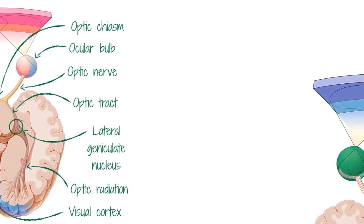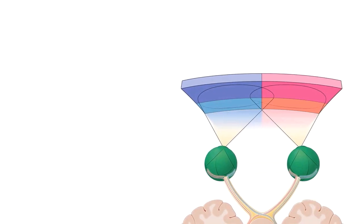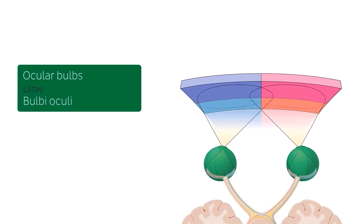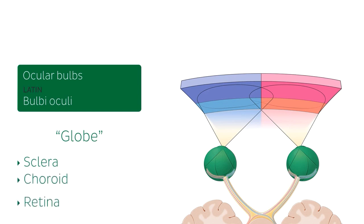The first structure we're going to look at is the ocular bulbs. The ocular bulb, or globe of the eye, is considered to be the eyeball without any structures within it such as the lens or the pupil. The ocular bulb consists of a wall enclosing a cavity of fluid. The wall has three layers: the sclera, the choroid, and the retina.